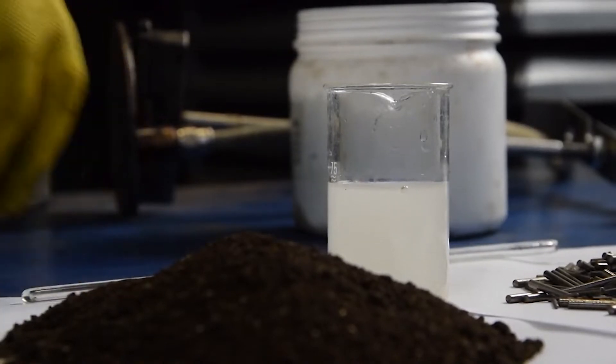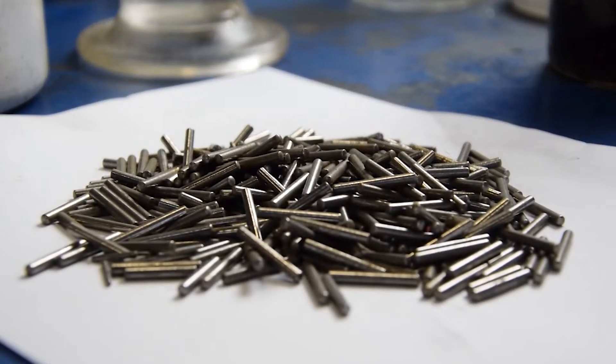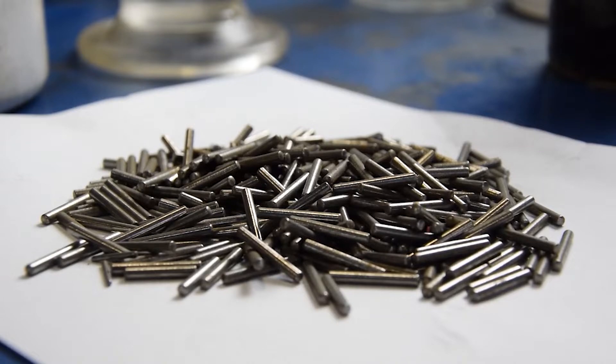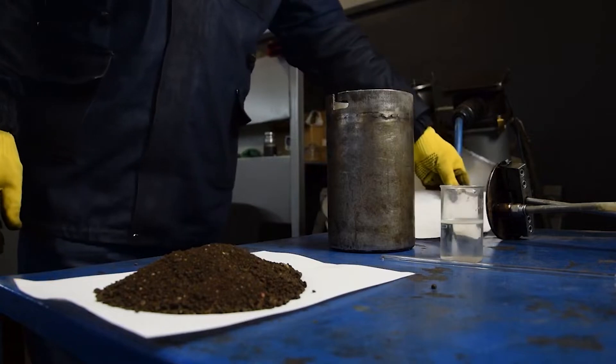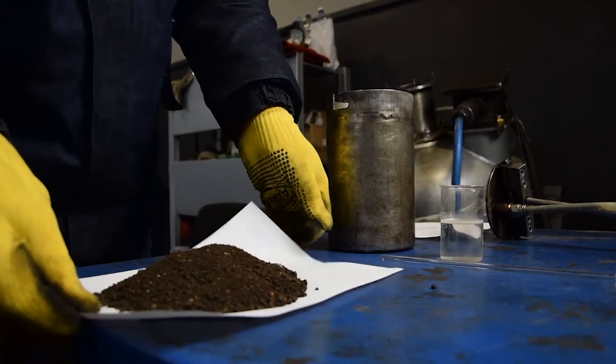The experiment was carried out on the AVS-150 vortex layer device. The working elements were steel particles with diameter of 1.5 mm and a length of 15 mm. We took 500 grams of particles to run the experiment.